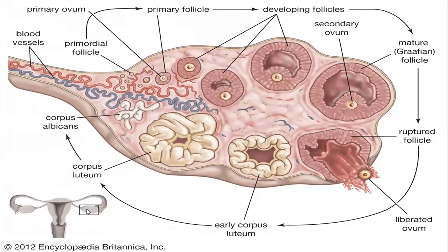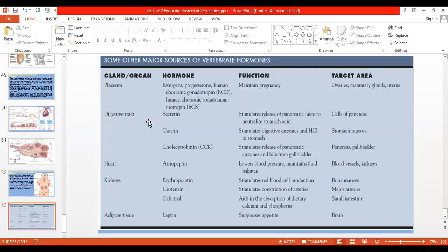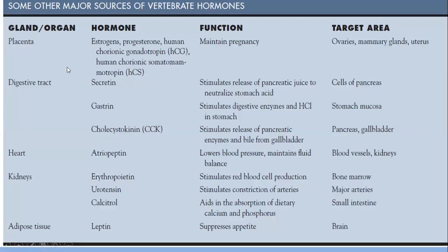This is shown in the cross-section of the ovaries, with growing follicles, developing follicles, and mature Graafian follicles. The yellow structure is the corpus luteum, which degenerates within 14 days without fertilization. Gonadotrophic hormones produce FSH and LH, which cause different activities and functions of the female reproductive tract. There is another slide showing other glands responsible for hormone production — placenta, digestive tract, heart, kidneys, and adipose tissue — which we will discuss later.